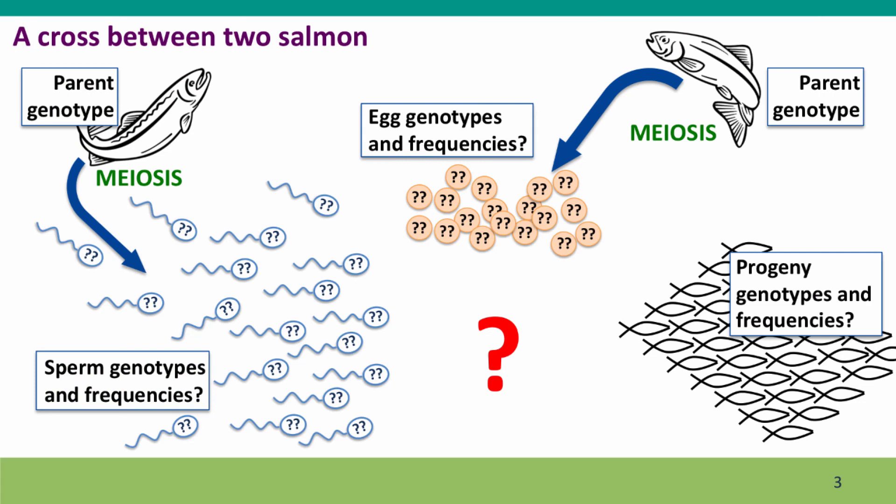Here's our cross that we diagrammed in the previous lecture with fish producing large pools of gametes that are allowed to mix together, come together randomly, and give the progeny genotypes. The way we're going to illustrate how the gametes come together is using this square, which is called a mating square or sometimes a Punnett square.